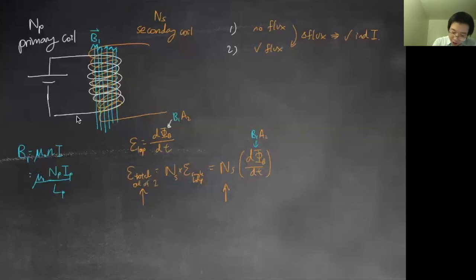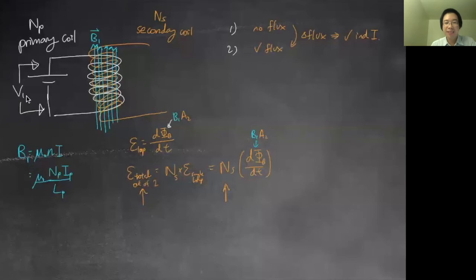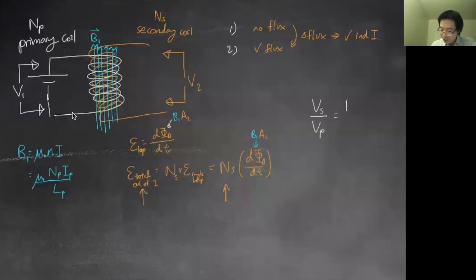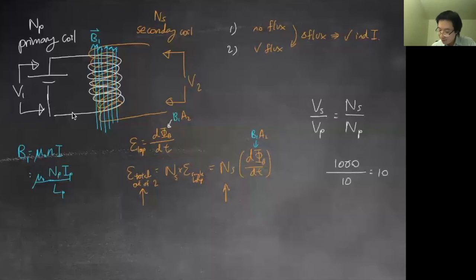Whatever voltage you start with in the primary, you can create a different voltage in the secondary. Working through the math — which I won't fully derive here — gives you the transformer turns ratio: V_S / V_P = N_S / N_P. So if you have 1000 turns in the secondary and 10 turns in the primary, you can increase the secondary voltage to 100 times the primary voltage. This device is called a transformer.